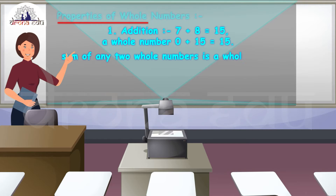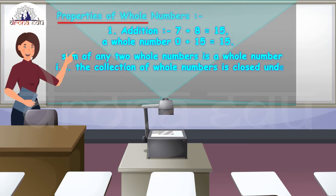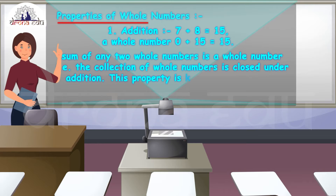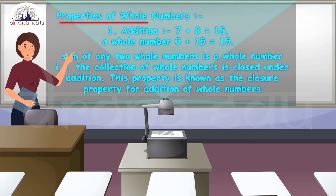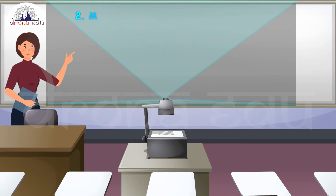From this we can see that the sum of any two whole numbers is a whole number. The collection of whole numbers is closed under addition, and this property is known as the closure property for addition of whole numbers.